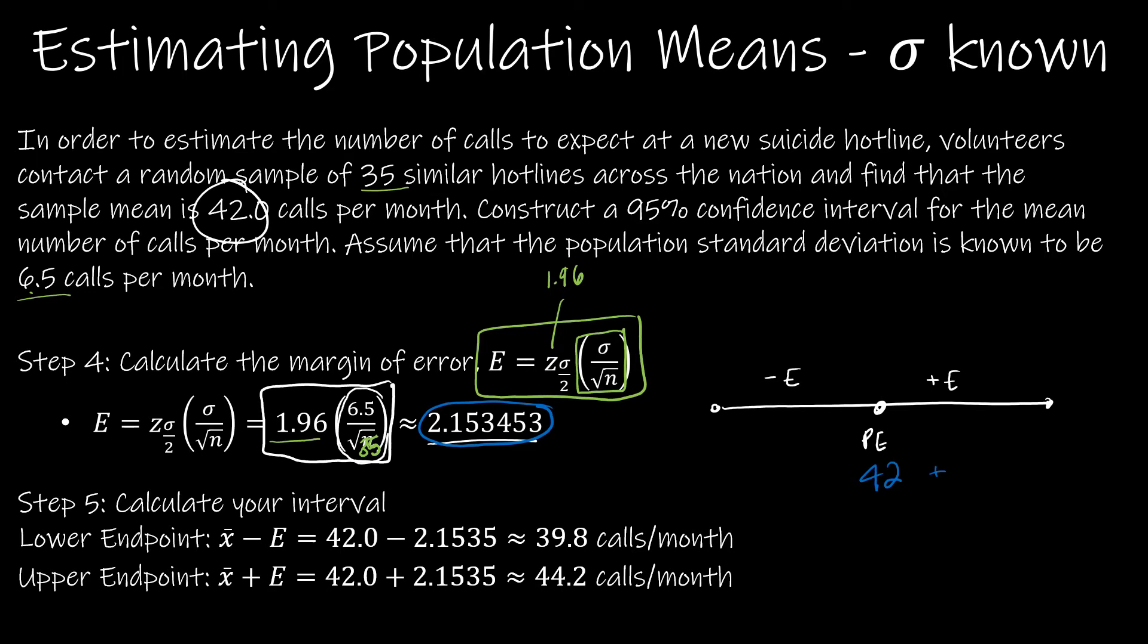And this, what we just calculated, said I'm going to add 2.15 to the right, and I'm going to subtract 2.15 to the left. And when I do that, these are my two endpoints. This guy is 39.8, and this guy is 44.2.